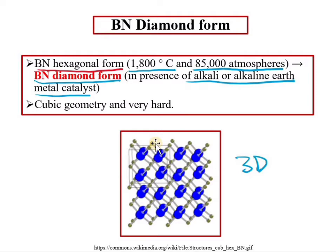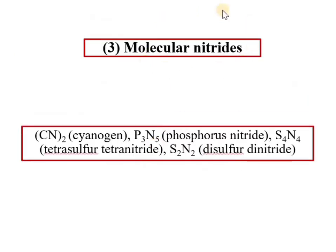The third class of nitrides is molecular nitrides. Examples include cyanogen, phosphorus nitride, tetra sulfur tetra nitride (S₄N₄), and disulfur dinitride (S₂N₂). These are examples of molecular nitrides, where nitrides of carbon, phosphorus, and sulfur fall into this molecular type category.